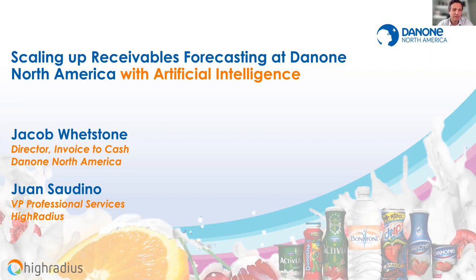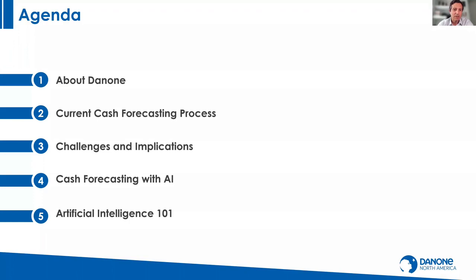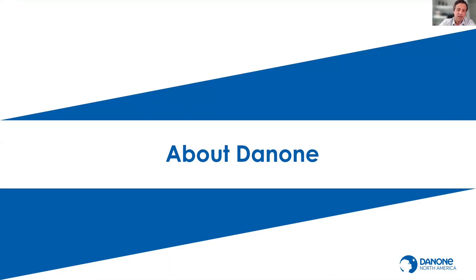My name is Juan Saudino, VP of Professional Services for High Radius Consulting. My team oversees the implementation of all our customers in the treasury space. Today we're going to go through an agenda: we'll talk about Danone North America, the cash forecasting process and challenges, how cash forecasting is done with artificial intelligence, and an AI 101 discussion applied to cash forecasting.